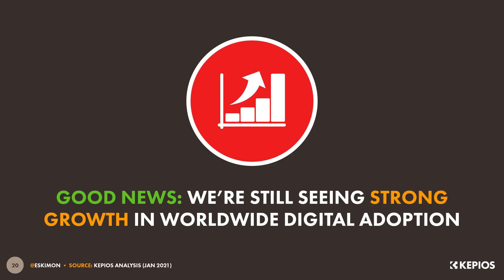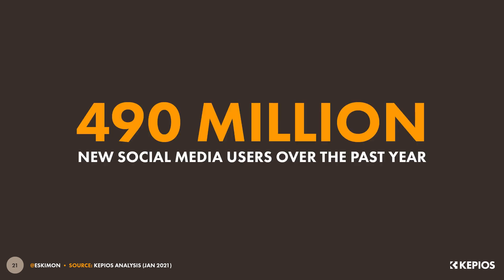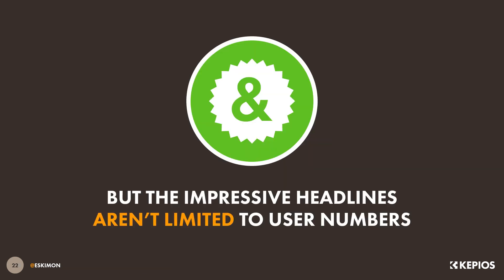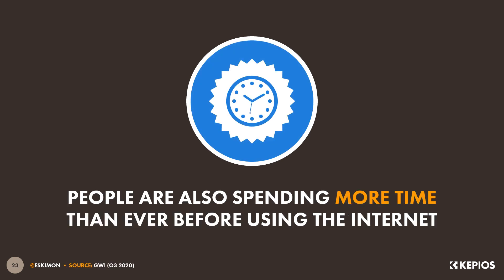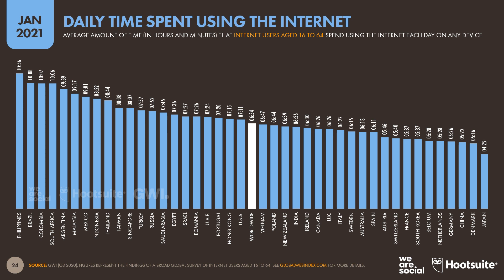The good news is that we're still seeing strong growth in digital adoption around the world, especially in those areas where connectivity remains low. For example, Kepios analysis shows that almost half a billion new users joined social media in 2020, equating to year-on-year growth of more than 13%. And just for clarity, that growth is based on unique users, so there should be very little duplication in those numbers. But this year's impressive headlines aren't limited to user numbers — people are also spending more time online than ever before.